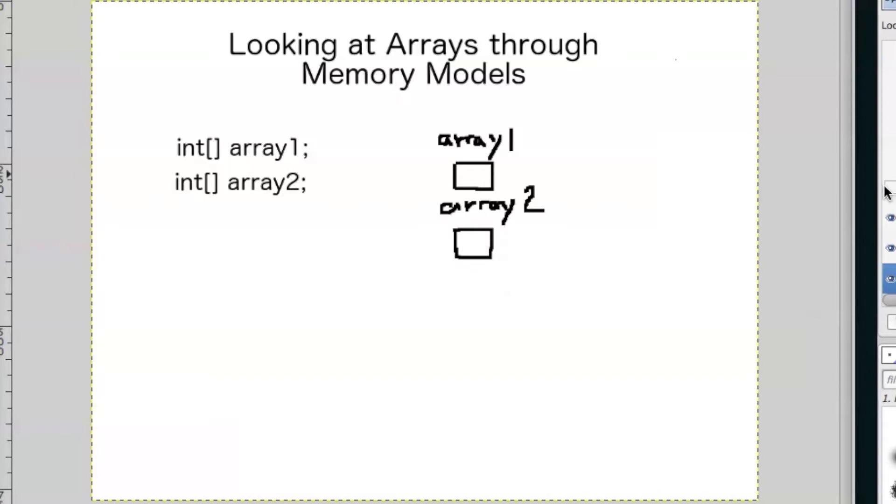So now we're actually going to make it point to something. So we're going to have array1 equals to a new array that we're going to create. And this is going to be of size 3. And remember when you create a new array, its values are 0, 0 right here. And our index is 0, 1, 2.